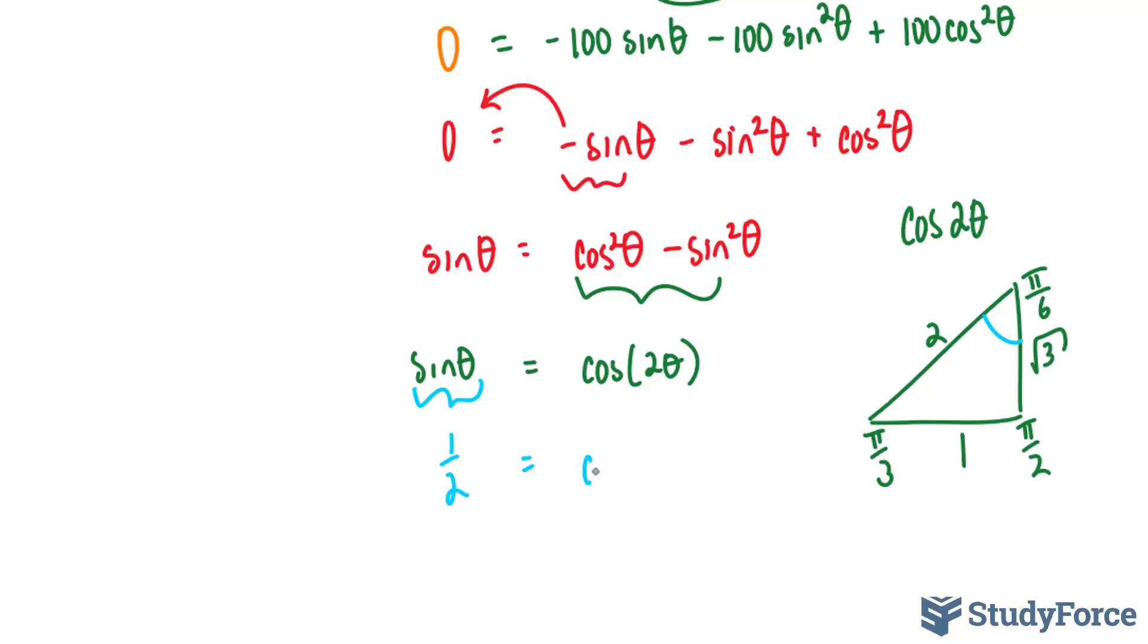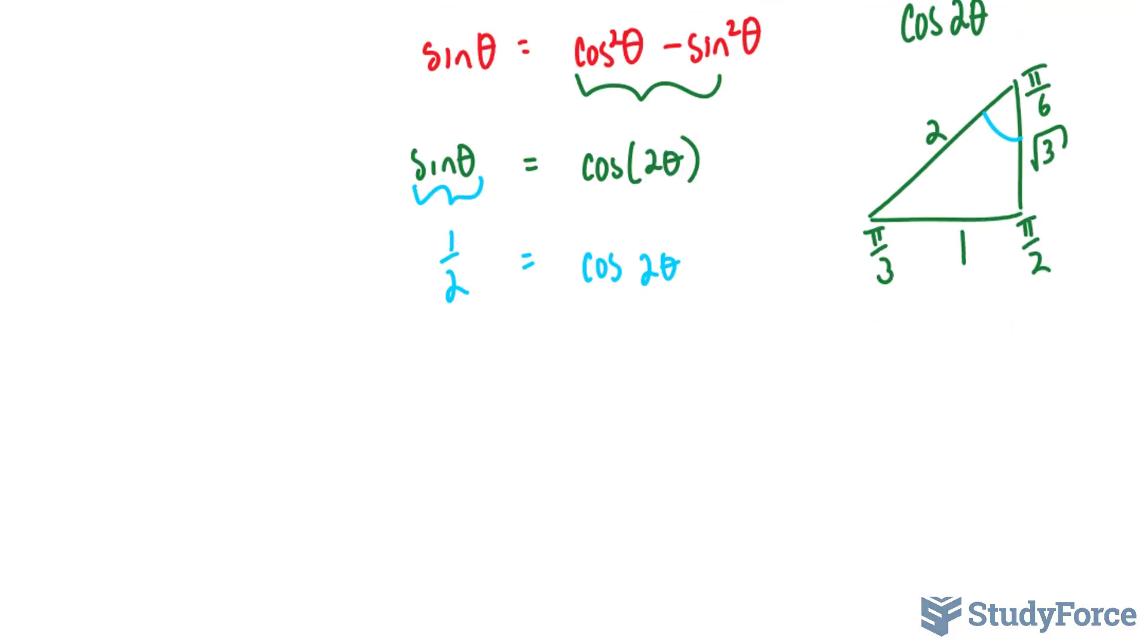And on the right side, we have cosine 2 theta. That remains the way it is. Now, we need to isolate for this theta. So we're going to take cos inverse of both sides. What happens on the right side, you end up with 2 theta. And on the left side, you end up with, well, let's use our calculator.